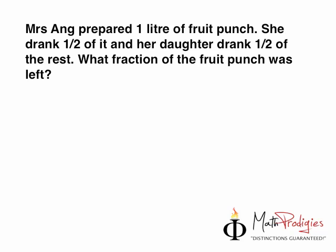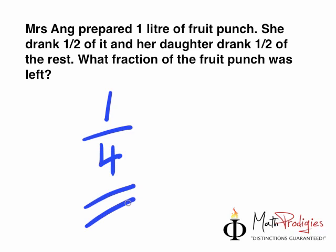The answer — for those of you who want to know what's the answer — the answer is 1 quarter, 1 quarter, 1 over 4. If you got it right, you are a math prodigy. Good job, okay?